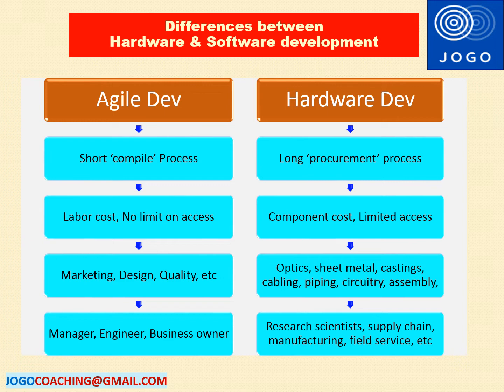The fourth difference is related to specialized or additional skills needed for software and hardware product development. Software projects need skill sets of project manager, software engineer, and business owner roles to deliver the product. In hardware development, we should have skill sets of research scientists, supply chain experts, manufacturing personnel, inspection personnel, and field service personnel.